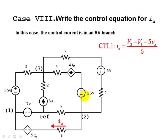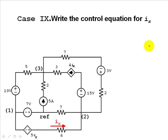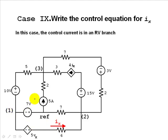Observe that the control current IX is written in terms of two node voltages and one other control variable Vx. Case 9 (same topology, current pointing right): the current flowing to the right through the 6-ohm resistor gives the control equation IX equals V1 minus V2 plus 5Vx, divided by 6 ohms.